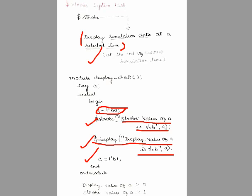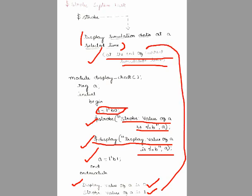So what does $display display, and what does $strobe display? $strobe, at the end of the current simulation time, displays the simulation data. $display has displayed the value at 1-bit 0 — it displayed 1-bit 0 — whereas $strobe has displayed the value of 'a' as 1, because $strobe displays data at the end of the current simulation time.